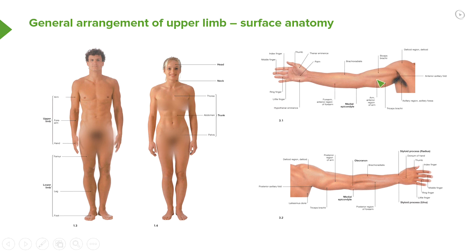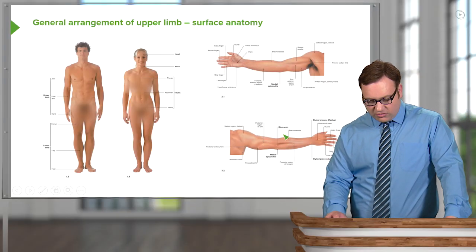Looking at the posterior aspect of the upper limb, we again see the muscular region caused by the mass of the deltoid muscle, and impressions for the various heads of the triceps muscle. The medial epicondyle is visible from this posterior view as well. We can also see the olecranon, the bony prominence on the posterior surface of the elbow. Moving into the forearm, on the medial aspect running along the same side as the thumb, we can see brachioradialis.